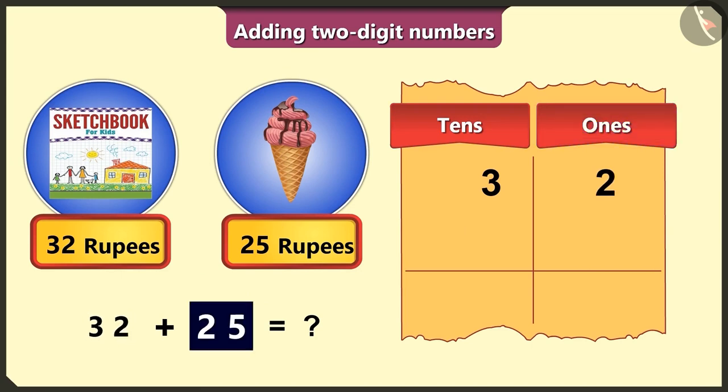Then, from twenty-five, number five comes last. So, five in the ones box and two comes first. So, we will write it in the tens box. Oh, wow, Bilu, you got it right.